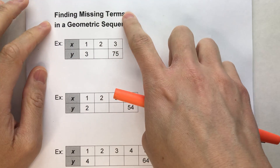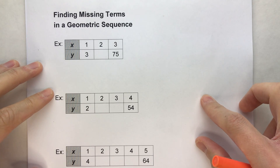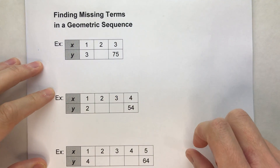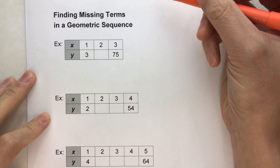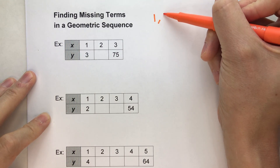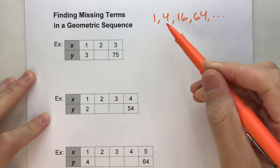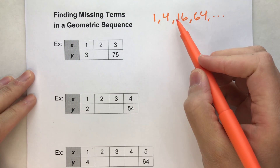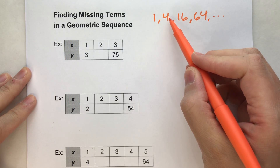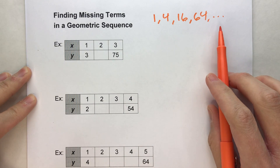Today we are finding the missing terms in a geometric sequence. A geometric sequence is a sequence of numbers where we're repeatedly multiplying by the same amount every single time to get the next number. For example, the sequence 1, 4, 16, 64 is geometric because we're repeatedly multiplying by 4. 1 times 4 is 4, 4 times 4 is 16, 16 times 4 is 64.